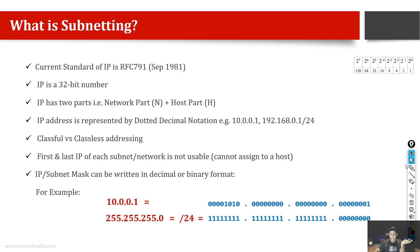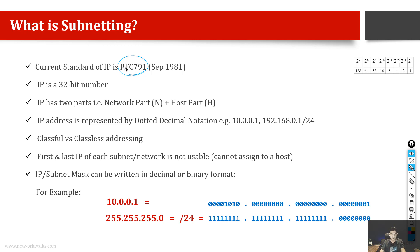After this, what is subnetting? Some basic things. The current standard for IP or internet protocol is RFC 791 — the most famous RFC of all. RFCs are documents, essentially literature documents, that tell us about the protocol. Similarly, OSPF has another RFC. RFC stands for Request for Comments and is a document that defines the whole protocol. RFC 791 came in 1981.